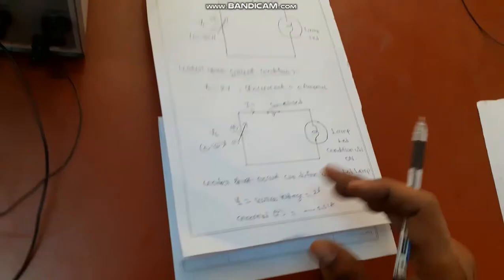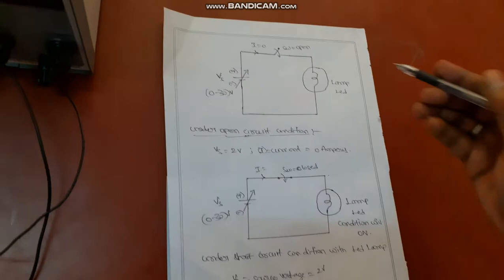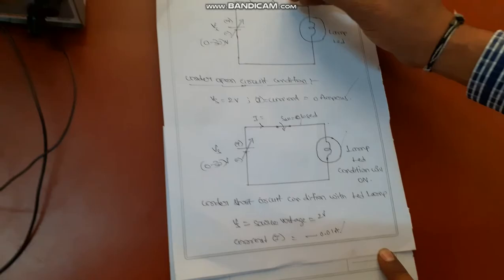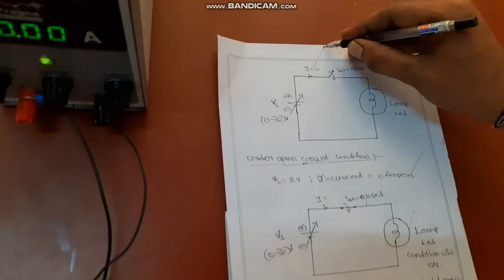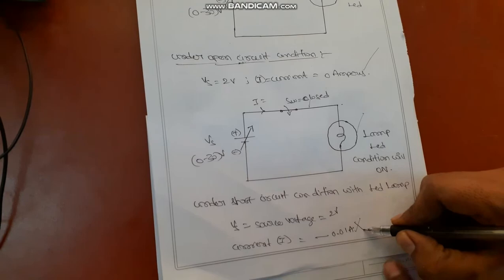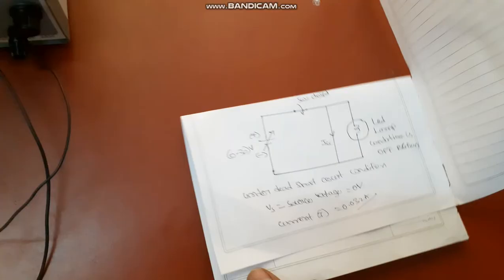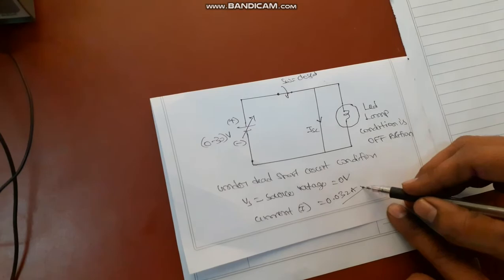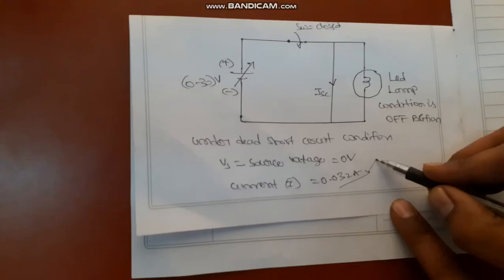Comparing all three cases: during open circuit condition, current is 0 amperes. During short circuit condition with load — that is, with the LED lamp — the current is 0.01 amperes. During dead short circuit condition, the current is very high at 0.032 amperes. Here we are comparing these three cases in this experiment.